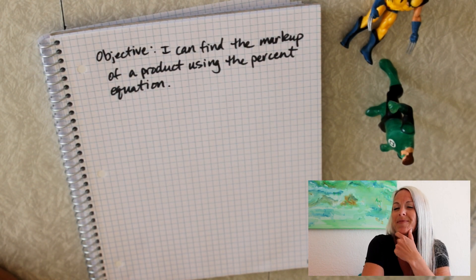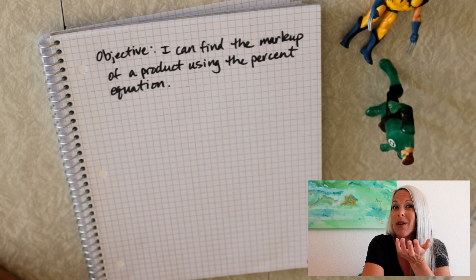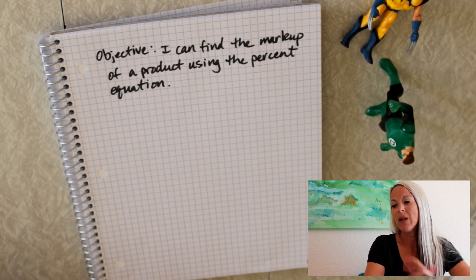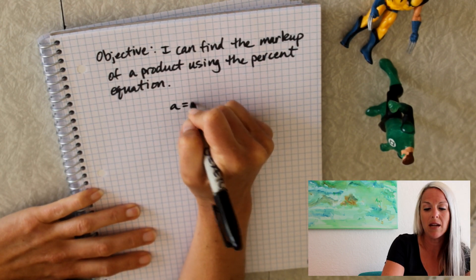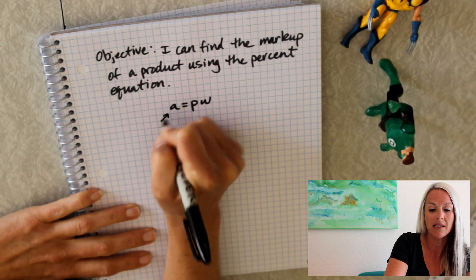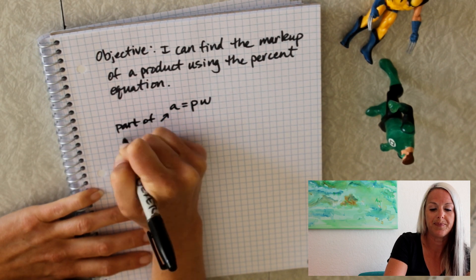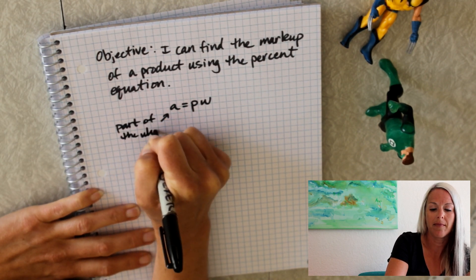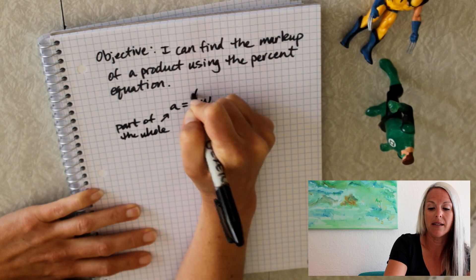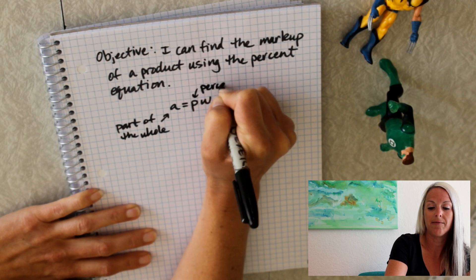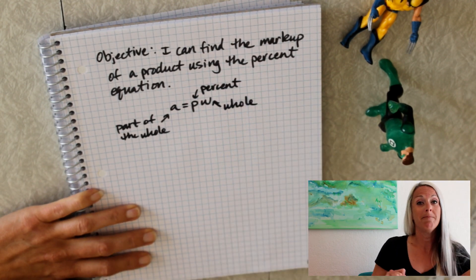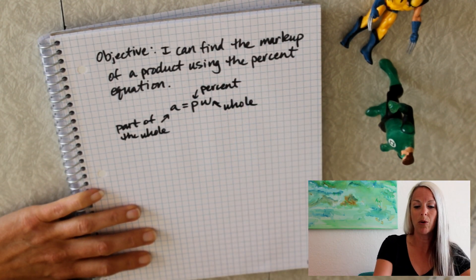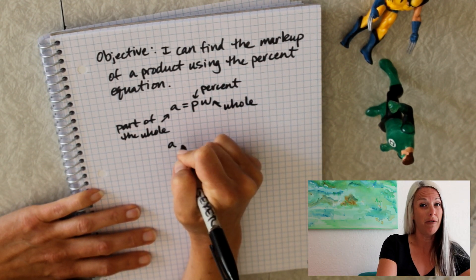So let's see how much Logan marked this bike up for. So again, our percent equation A equals P times W. So that's part of the whole. This is the percent. And this is the whole. So again, we're trying to find out part of the whole.